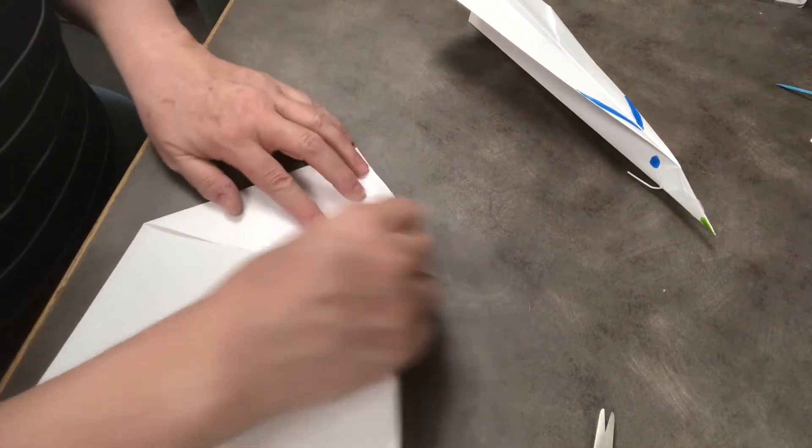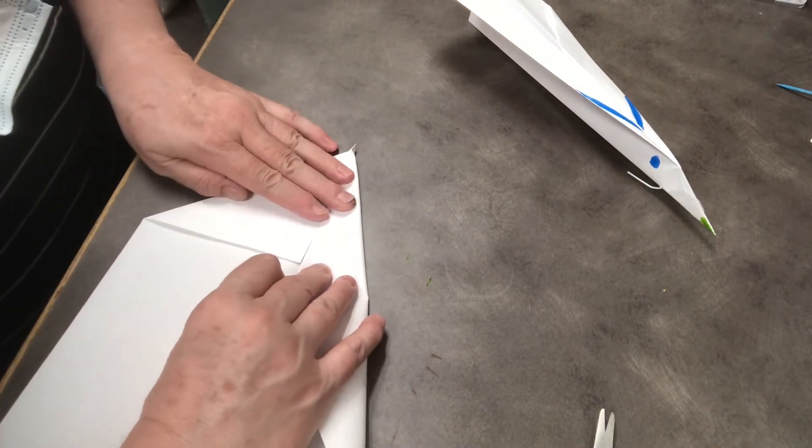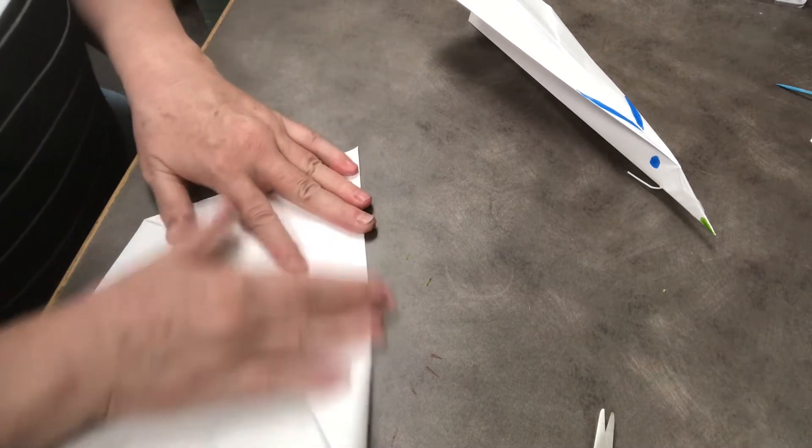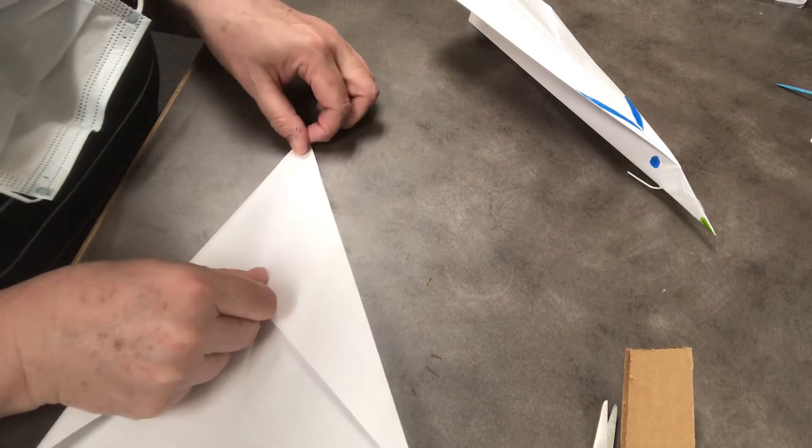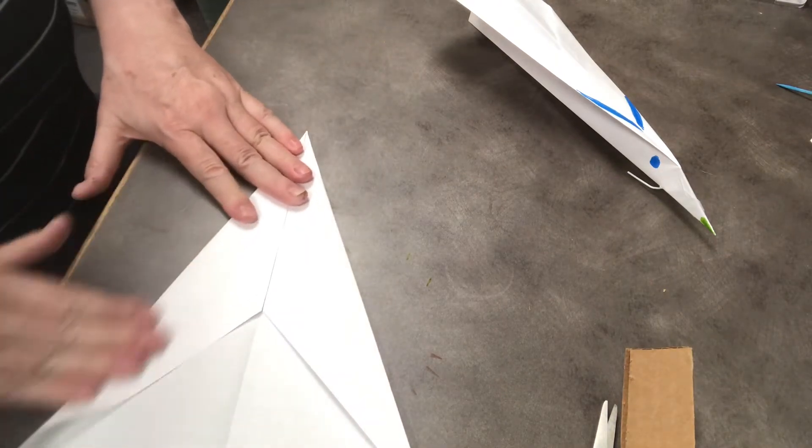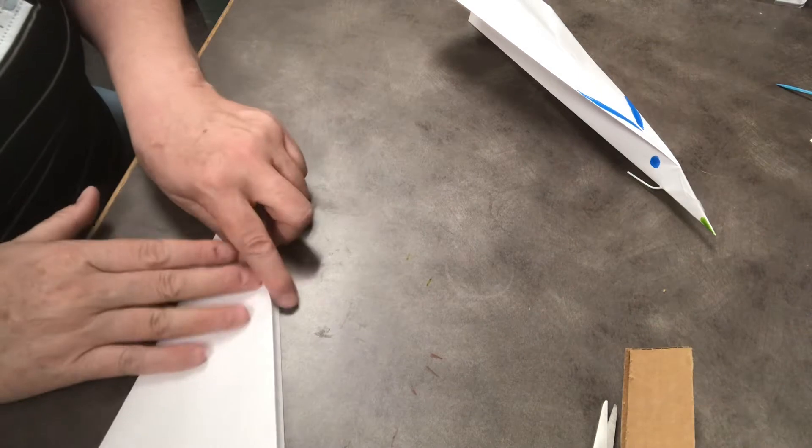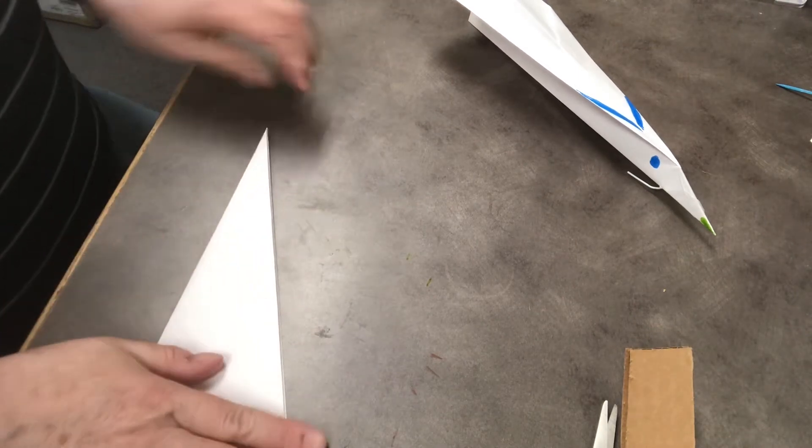Then fold them in one more time, line it up with that middle line again, crease. And this side. We want them to be the same, nice and tight, straight creases. And we're going to close it. Crease.